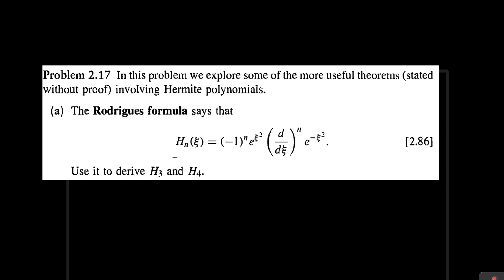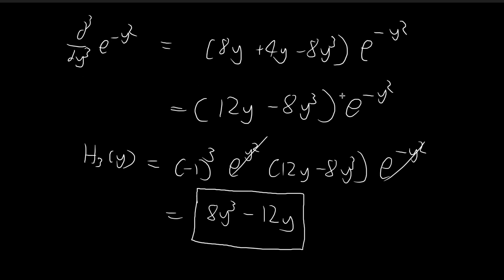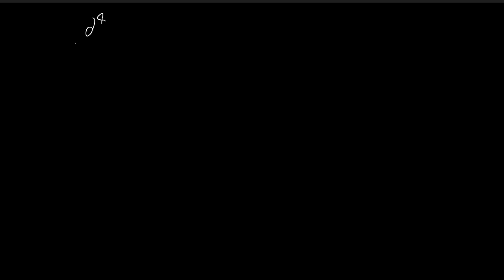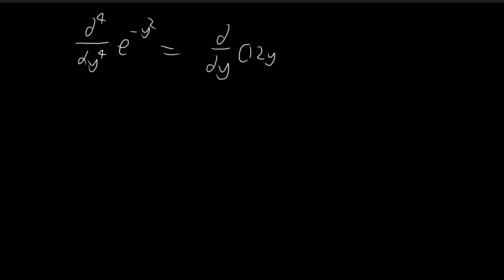Now we're going one step further to find H4. To find H4, we need to evaluate the fourth derivative. Since we've already evaluated the third derivative, we can start from there. The fourth derivative just requires us to differentiate the third derivative: 12y minus 8y cubed times e to the power of negative y squared.